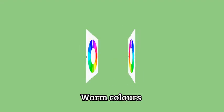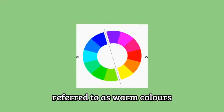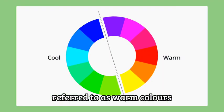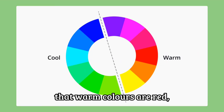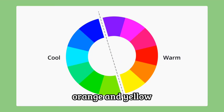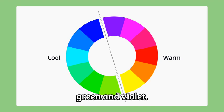We often hear colors referred to as warm colors or cool colors. Warm colors are red, orange and yellow, while cool colors are blue, green and violet. Both warm and cool colors can be used effectively in the same room.